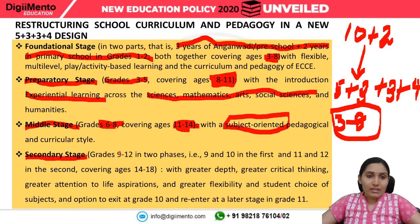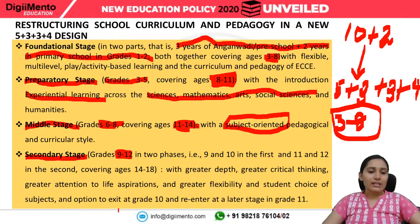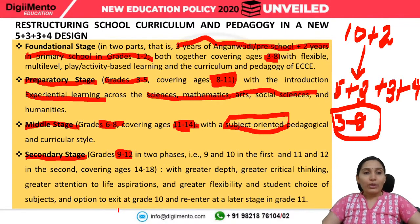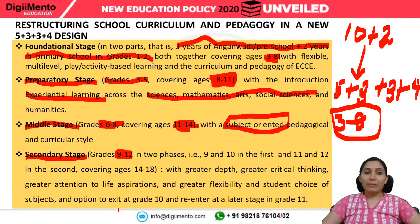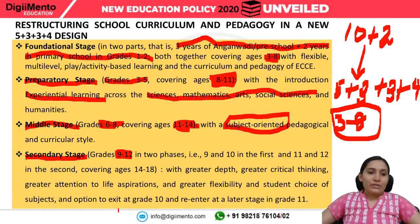The secondary stage is from classes 9 to 12, for ages 14 to 18. Under the new system the stages are now known as foundational, preparatory, middle, and secondary. The secondary stage will be in two phases — grades 9 and 10 in one phase, and grades 11 and 12 in the second phase.